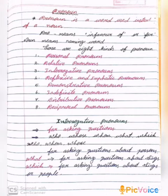Next, 'what' is used for asking questions about things — pencil, book, table, or chair. 'Which' is used for asking questions about things or people — both.